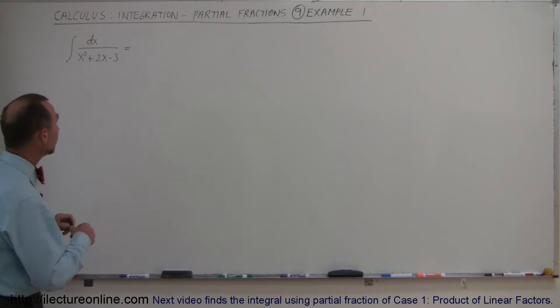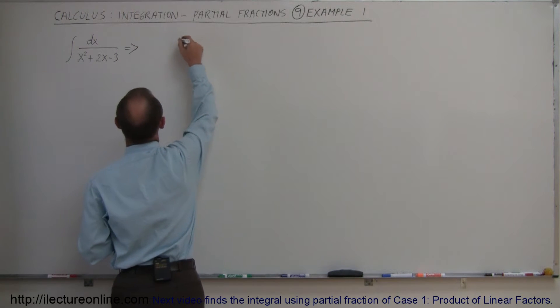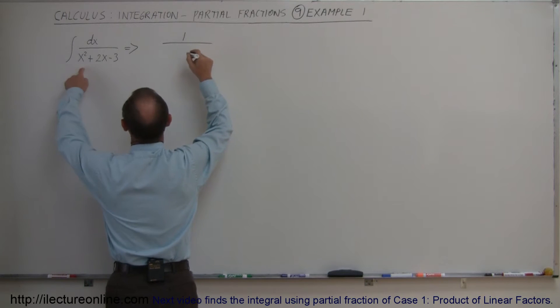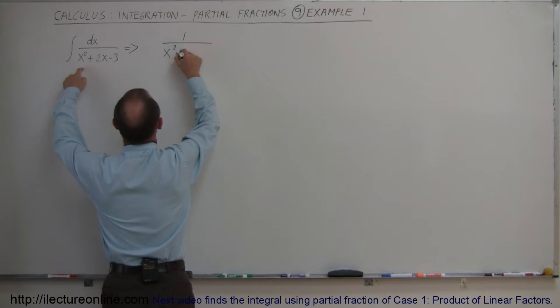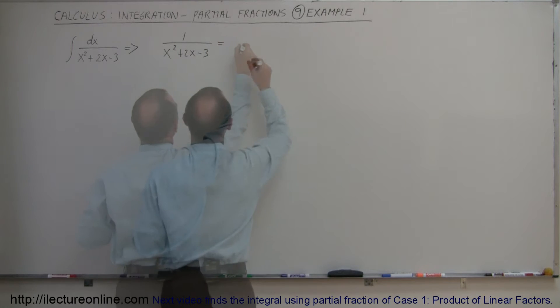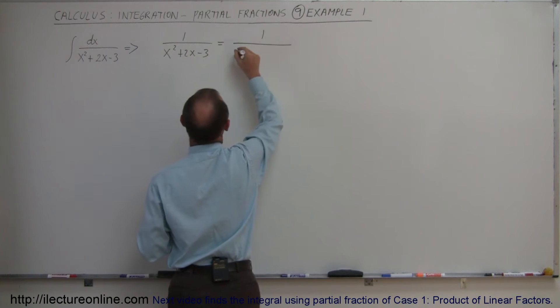So what we're going to do is rewrite this content inside the integral sign: 1 over x squared plus 2x minus 3. We're going to write it in the denominator and let's see what that looks like.